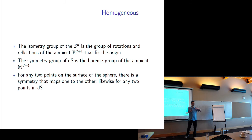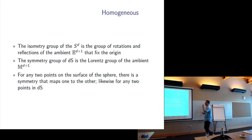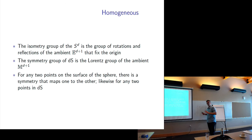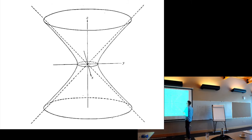It's homogeneous. Just like when working with the sphere, the isometry group consists of all rotations and reflections of the ambient Euclidean space that leave the origin invariant. Analogously, the symmetries of de Sitter spacetime are all the Lorentz symmetries of the ambient Minkowski spacetime that leave the origin invariant. Just like on the sphere you can map one point to another by doing a rotation, similarly any two points on de Sitter spacetime are equivalent geometrically — there's an isometry that maps one to the other.